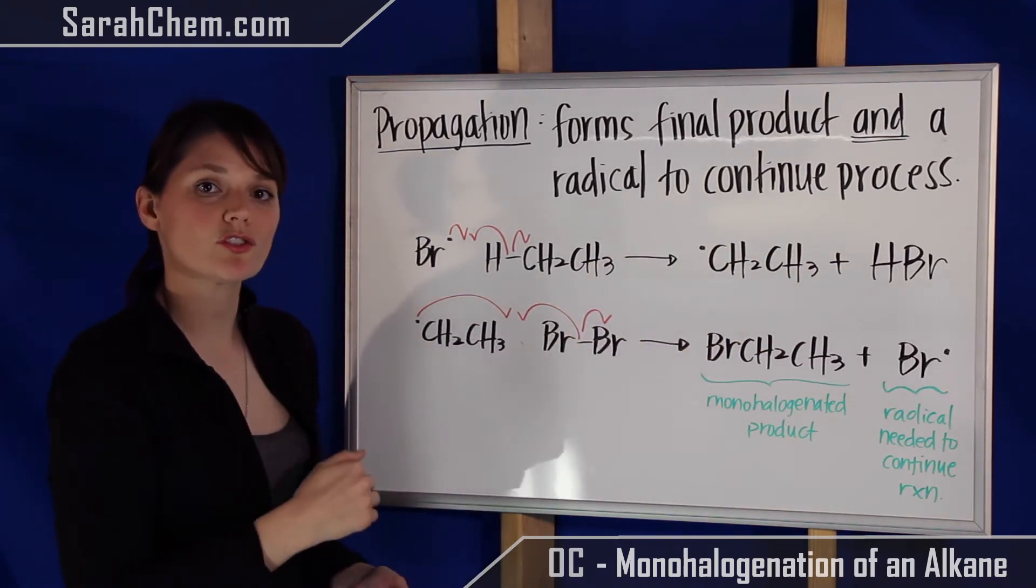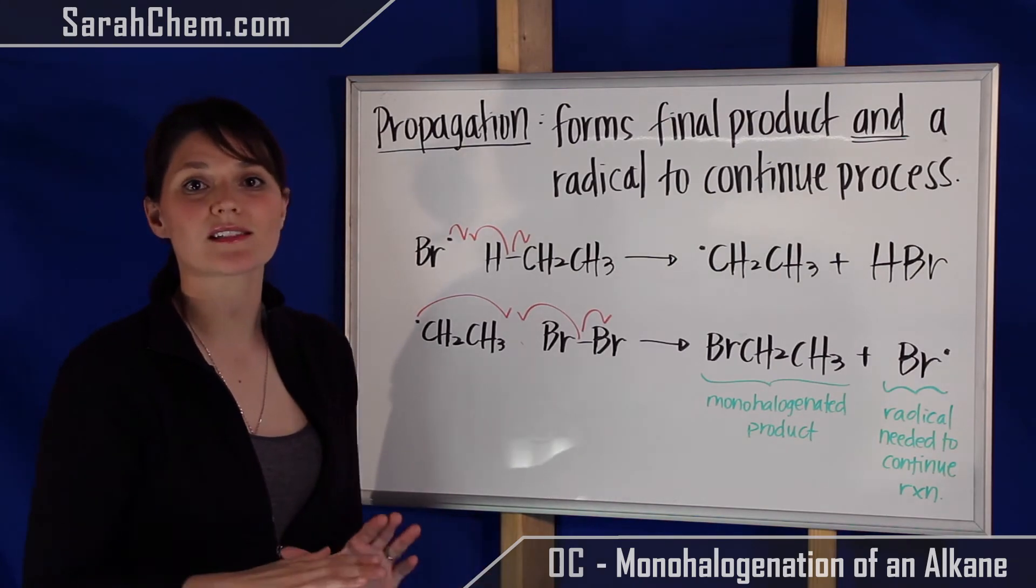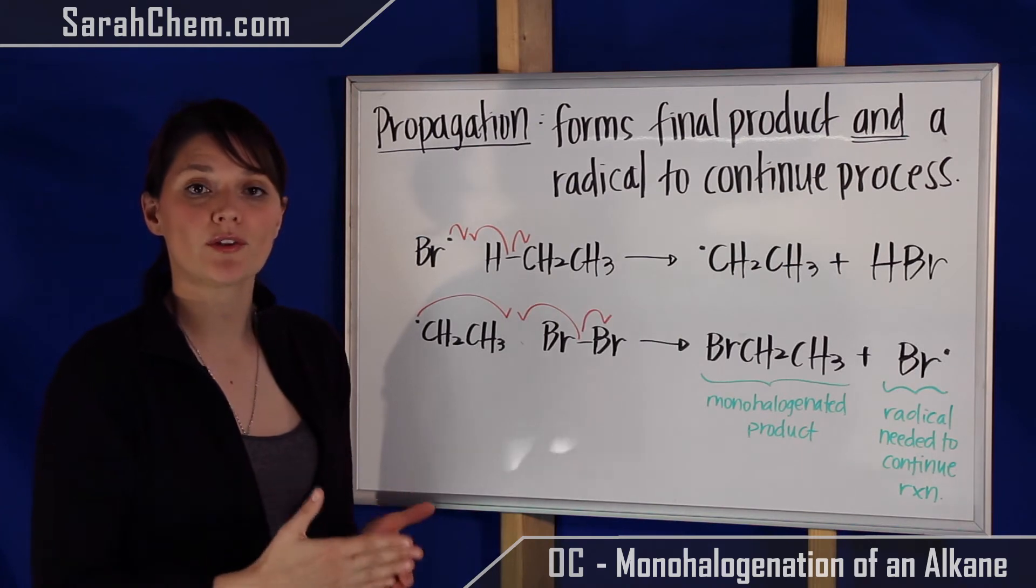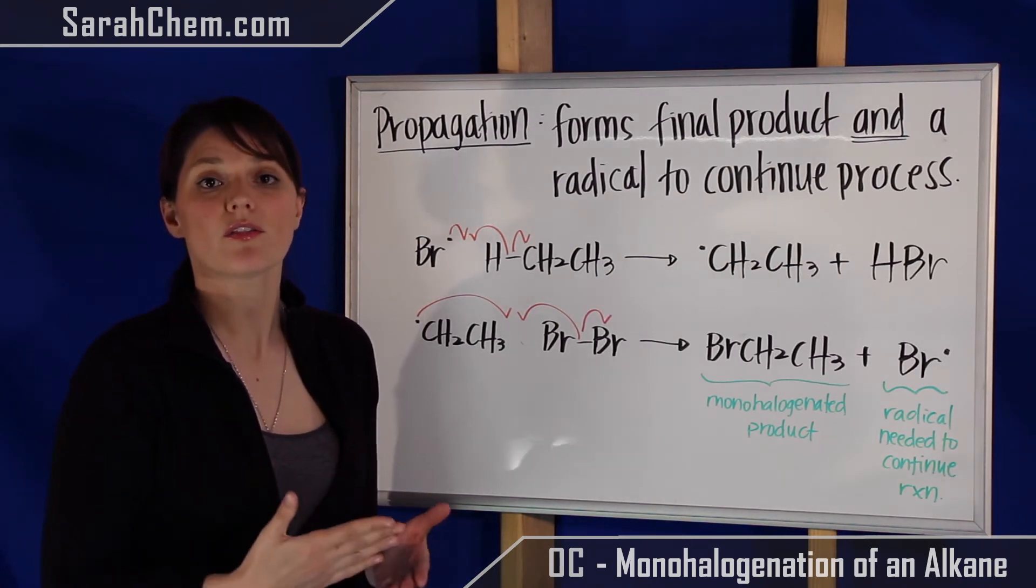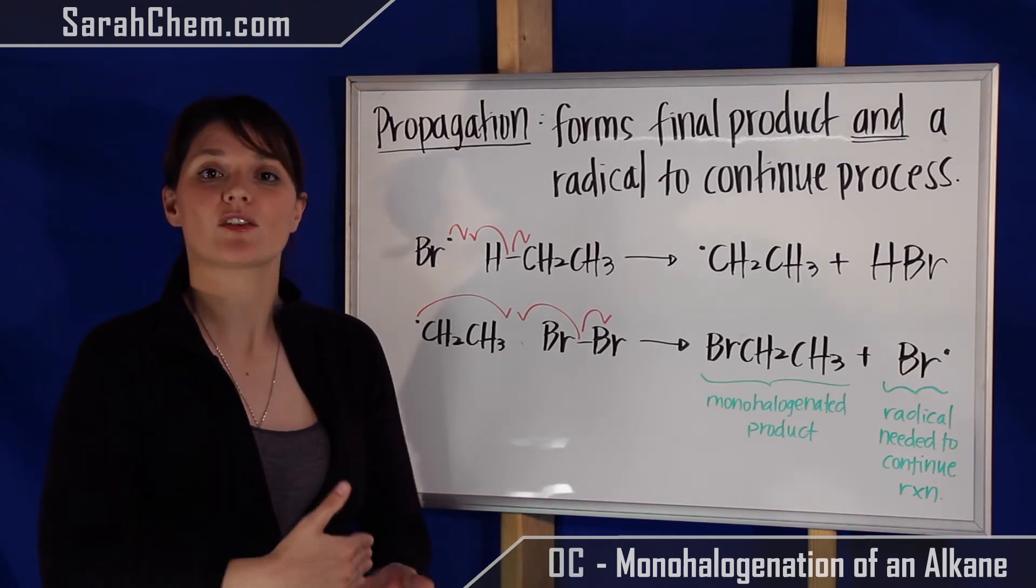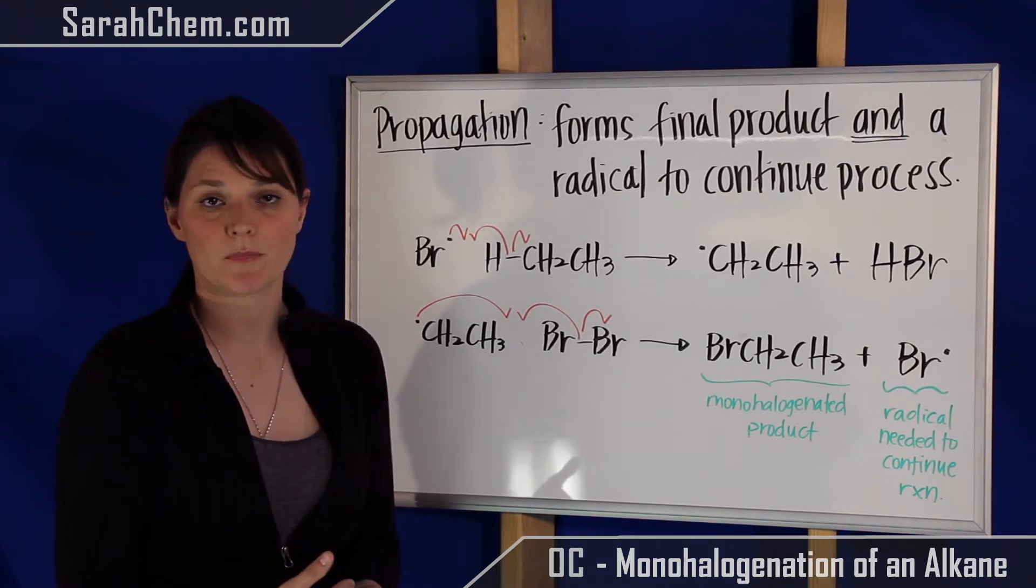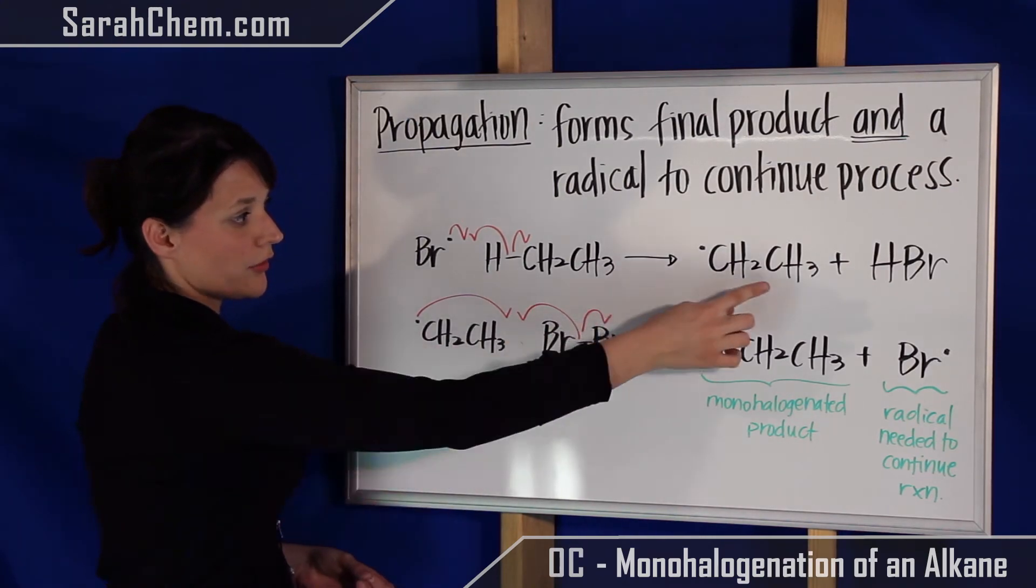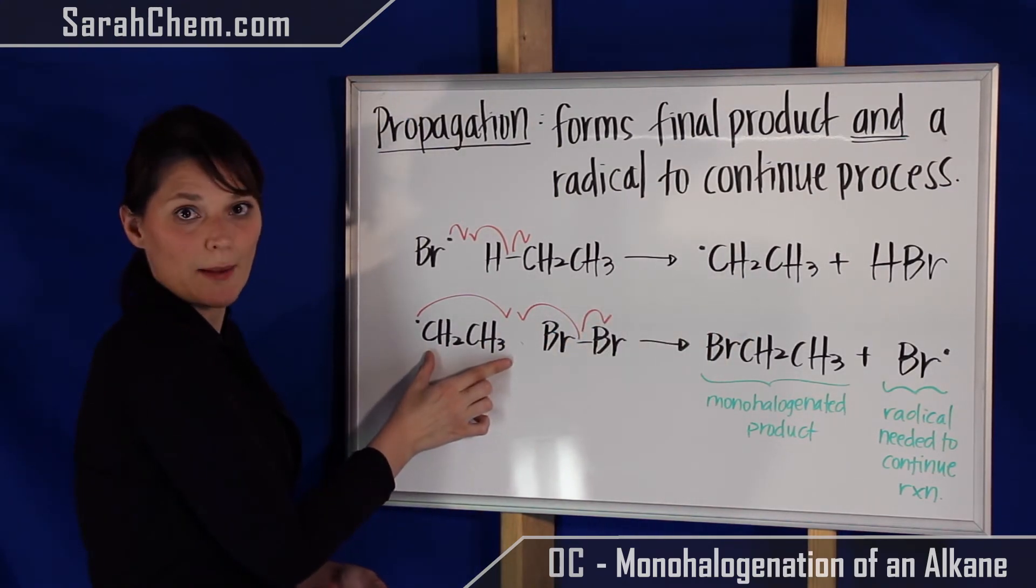Now this here you know for sure is not going to be the final step of the propagation, because at this point we have not created the final product that we want, the monohalogenated alkane. So that means you know, okay, there's another step that I need to take. So over here then, step two would be that you take that radical that you made and use it in the next step.